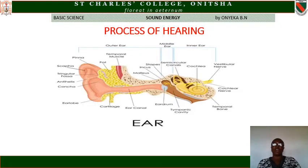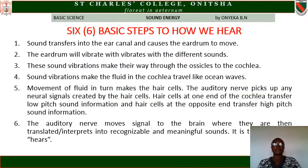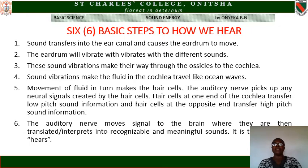Now we move to the process of hearing. Looking at the diagram of the ear, we will use it to explain the six basic steps of how we hear. Step one: sound transfers into the ear canal and causes the eardrum to move or vibrate. Step two: the eardrum vibrates with the different sounds. Step three: different sound vibrations make their way through the ossicles to the cochlea.